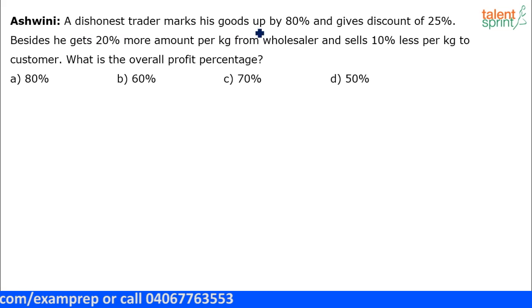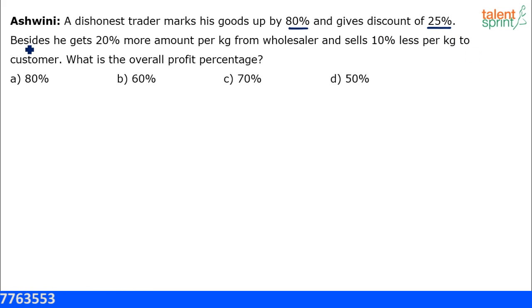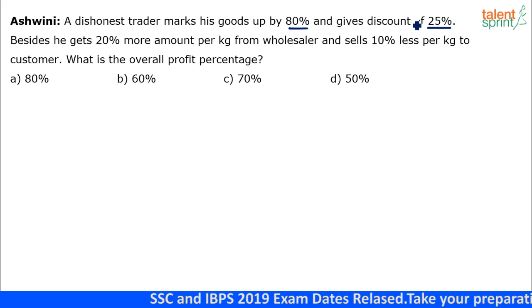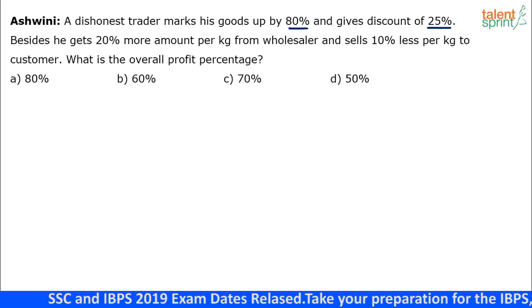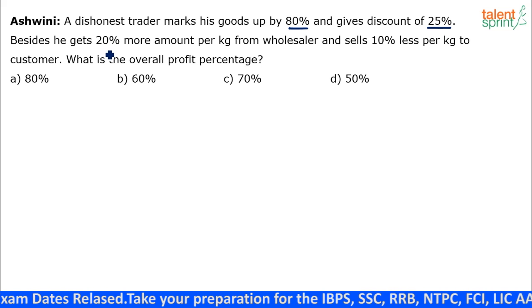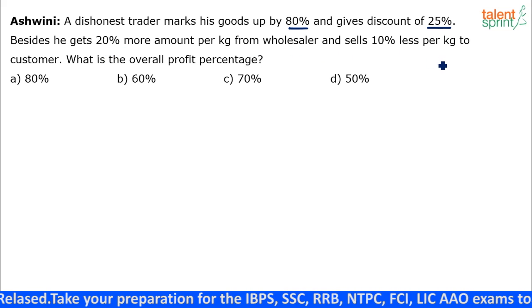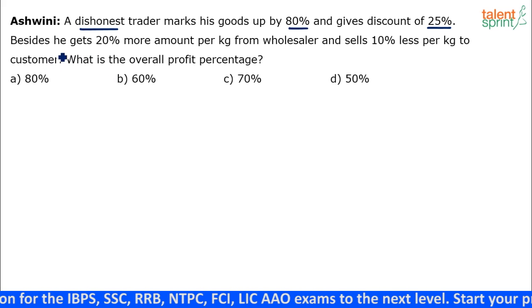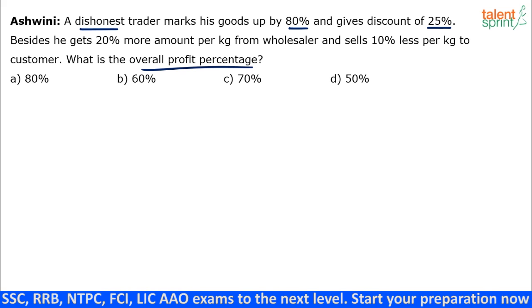A dishonest trader marks his goods up by 80 percent and gives a discount of 25 percent. In addition, he gets 20 percent more per kg from the wholesaler and sells 10 percent less per kg to the customer. He's making profit in two ways: one through marking up and discounting, and the other through the quantity he procures versus what he sells.